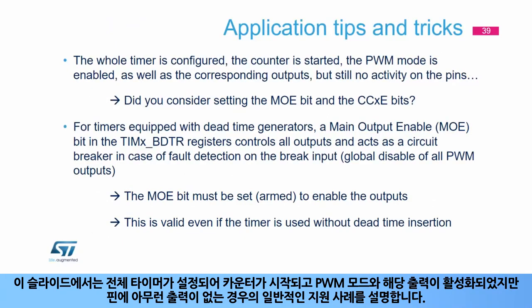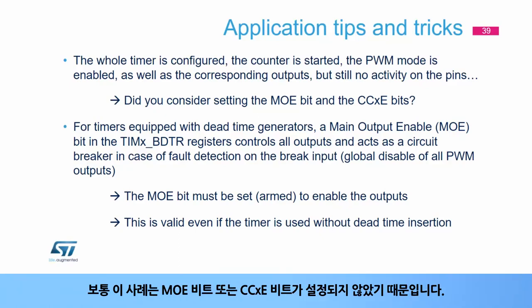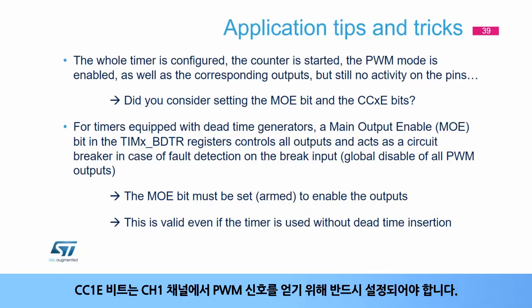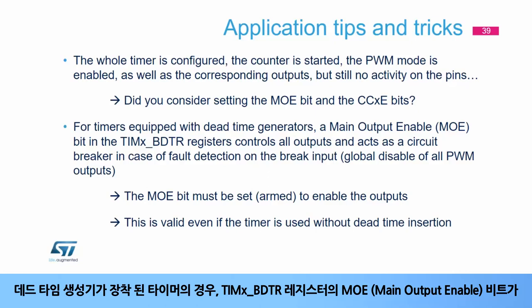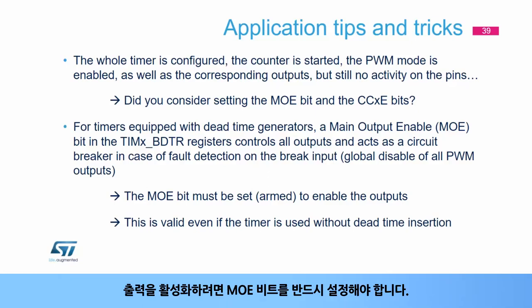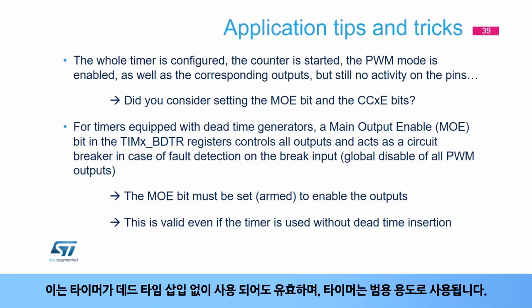A common support case is where the whole timer is configured, the counter is started, PWM mode is enabled, and the corresponding outputs are enabled, but there is no activity on the pins. Usually this is because the MOE bit or the CCxE bit was not set. The CCxE bit in the TIMx_CCER register defines the configuration of a CCx channel as input or output; the CC1E bit must be set to get a PWM signal on the CH1 channel. For timers equipped with dead time generators, a main output enable (MOE) bit in the TIMx_BDTR register controls all outputs and acts as a circuit breaker in case of a fault. The MOE bit must be set to enable the outputs, even if the timer is used without dead time insertion.